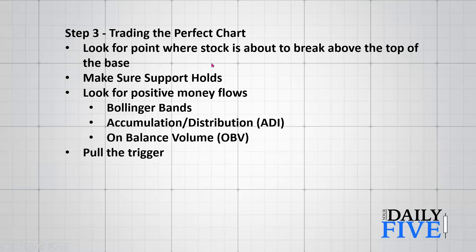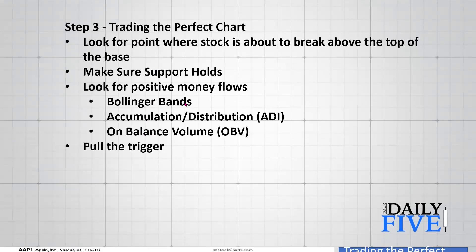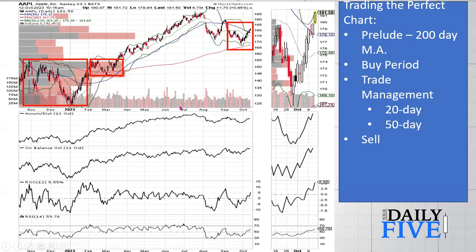So how do you trade this perfect chart? First, look for the point where the stock is about to break above the top of that base. Make sure support holds, then look for those positive money flows: first the shrinking of the Bollinger Bands, then short covering in accumulation-distribution, then on-balance volume turning positive - then you pull the trigger.